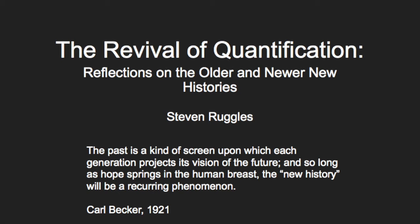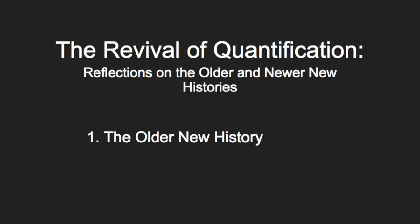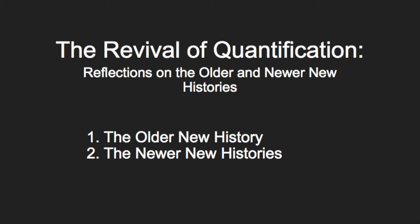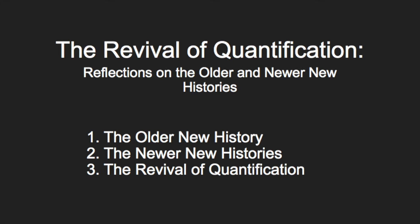Today I'm going to talk about three waves of quantification by American historians. I'm going to start by talking about the new history of the progressive era, mainly between 1915 and 1940. Then the new histories of the 1960s through the 1980s, including the new economic history, the new political history, and the new social history. And finally, the revival of quantitative history across the social sciences.